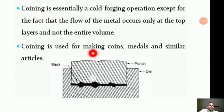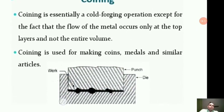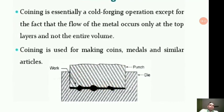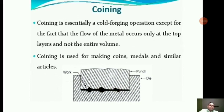As mentioned, coining is used for making coins, medals, and similar articles. In the schematic diagram, the work is the dark black piece, with the punch above and die below, both having the coin contour shape. This produces the coin-shaped material at the end of the operation.